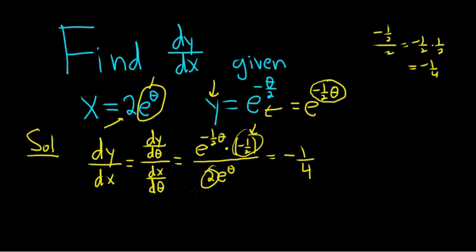You can simplify these e's. What you do is you subtract the exponents. You would get e^(-θ/2 - θ). We're subtracting negative one-half theta minus theta.